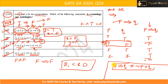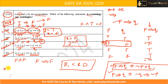Also remember: p implies q is equivalent to negation of q implies negation of p — this is called contrapositive. I suggest you go through the rules of equivalence, as they are useful for solving this type of question. I hope you understand the video solution. Thank you.